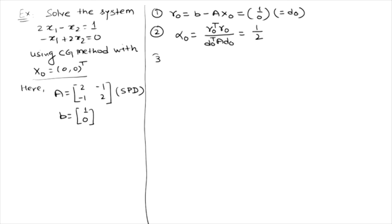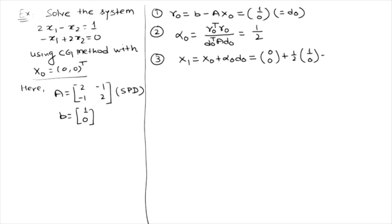In the third step, since we have α₀, we can calculate the next approximation x¹ = x⁰ + α₀D⁰. So x¹ = [0, 0] + (1/2)[1, 0] = [1/2, 0].